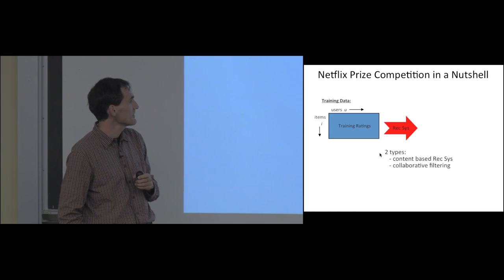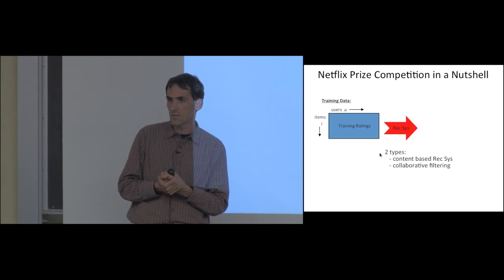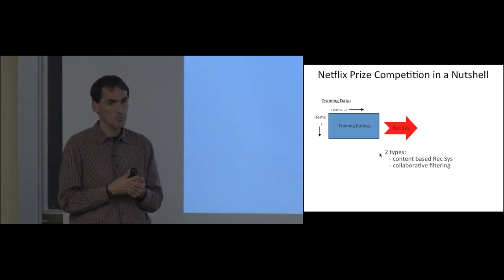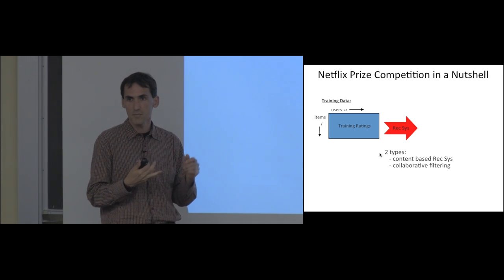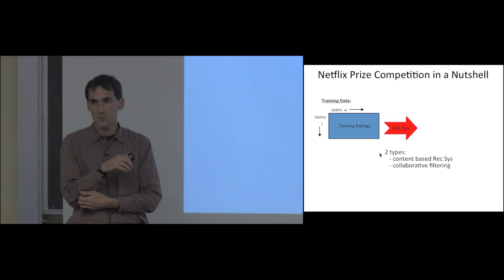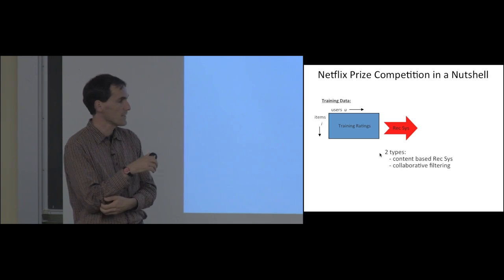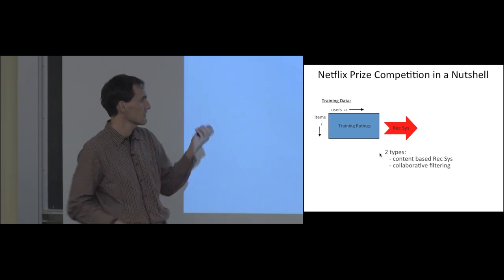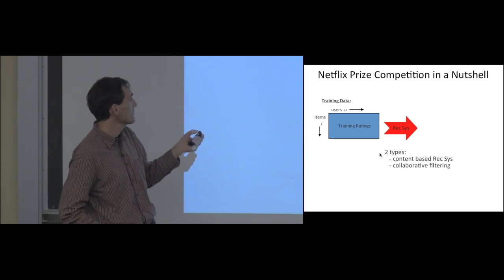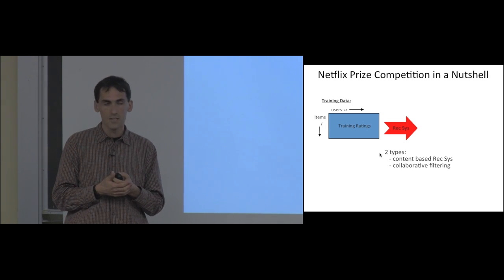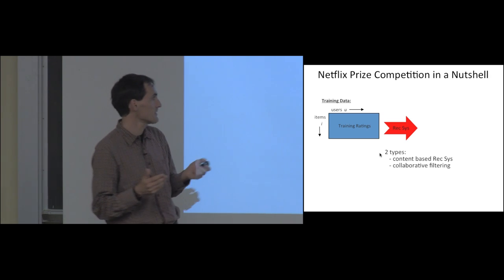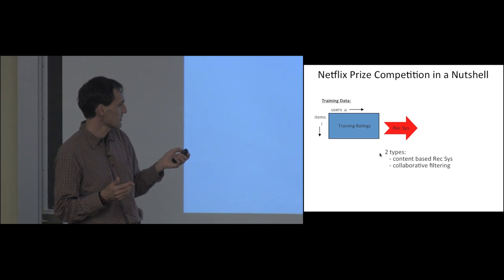The task was to build a recommender system. There are basically two kinds. The first is the content-based recommender system, which uses actual content features like the director, genre, and actors of the movie to predict what people like. But it turned out not to work very well. What worked much better is so-called collaborative filtering, where you just look at the rating matrix and treat it as a matrix completion problem, without taking into account genre, director, and so on.